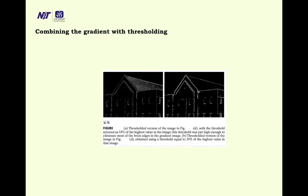Combining the gradient with thresholding: without thresholding, no range cutoff is applied. With thresholding, values below a threshold become 0 and above become 1. The first image is the original, the second is the thresholded version, and the third is thresholded at 33% of the highest pixel value.